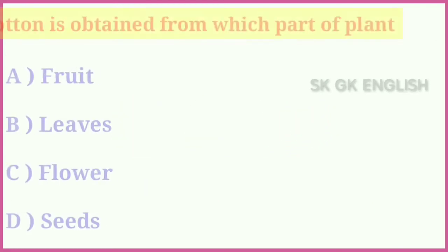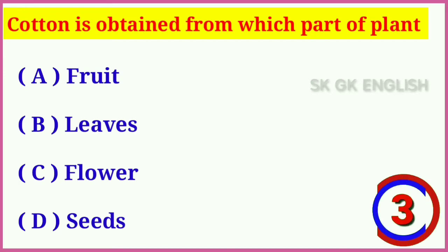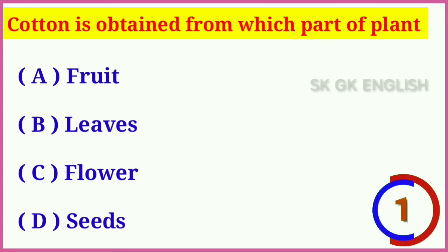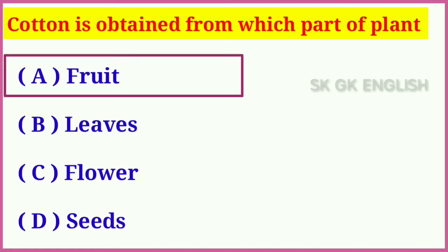Question number seven: Cotton is obtained from which part of a plant? Options are: A. Fruit, B. Leaves, C. Flower, D. Seeds. Correct answer is A. Fruit.